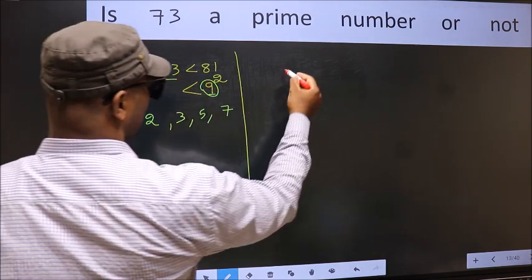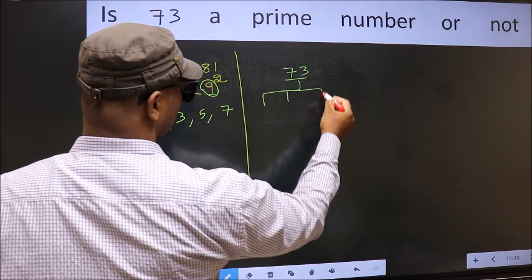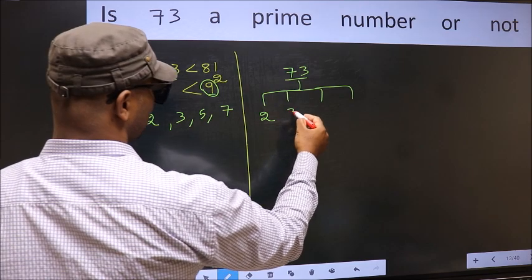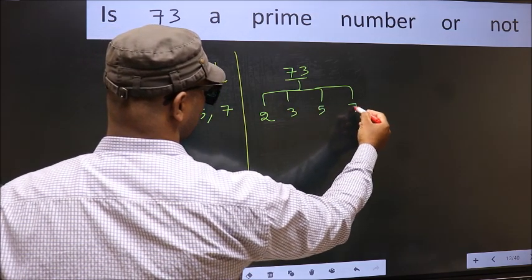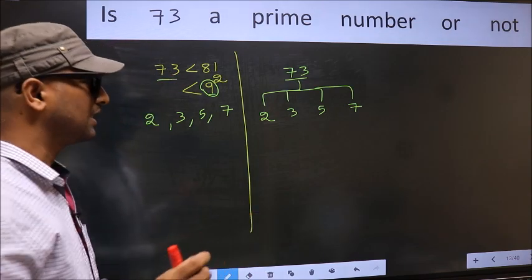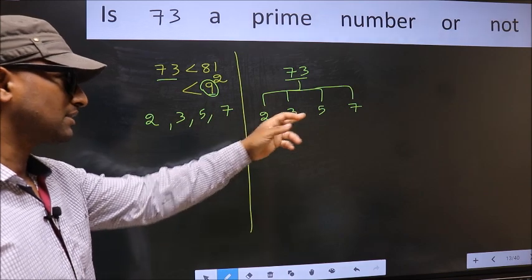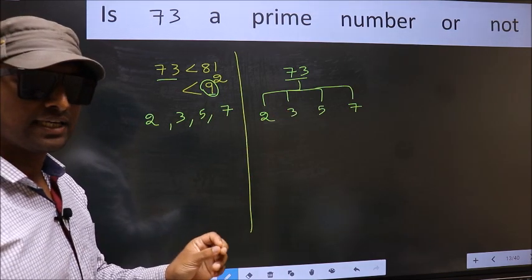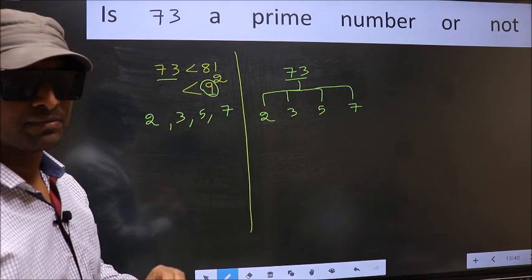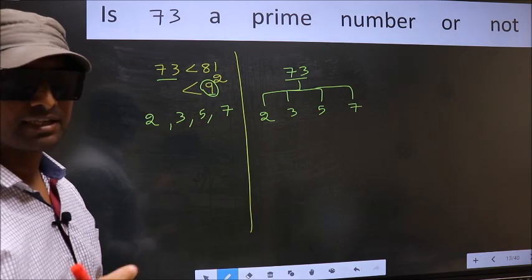Now for the given number, we should check divisibility by these numbers. That is 2, 3, 5 and 7. If the number 73 is divisible by any one of these numbers, we say it is not prime. Otherwise, it is prime. Did you understand the method? Let us check the divisibility.